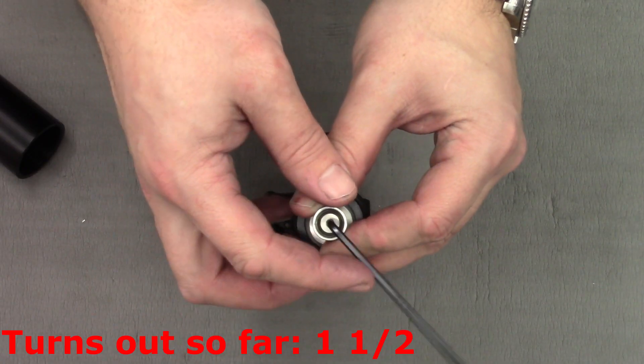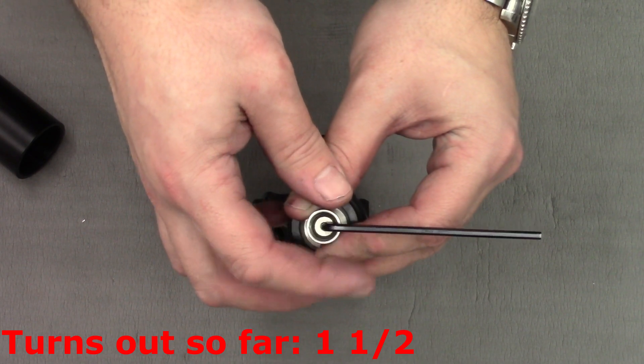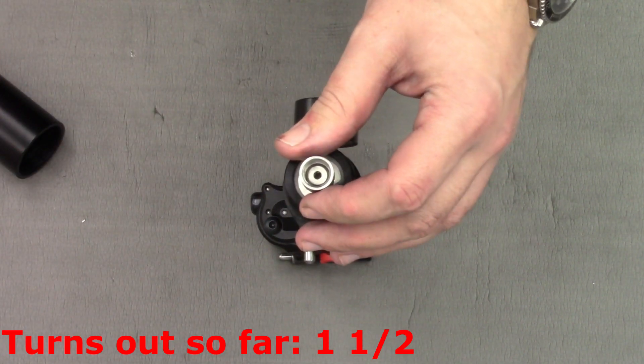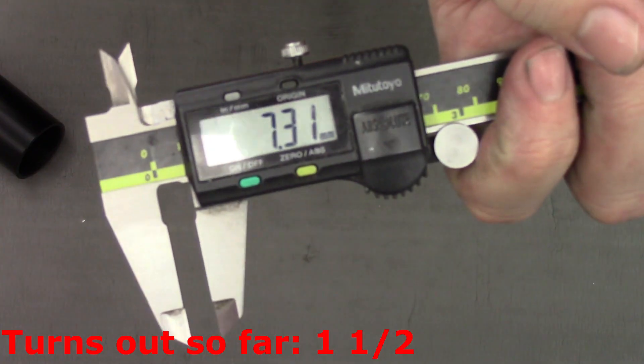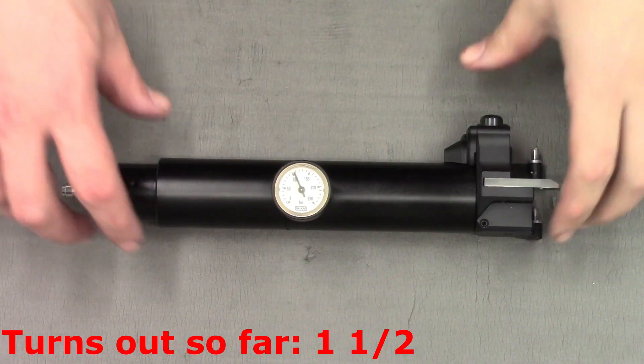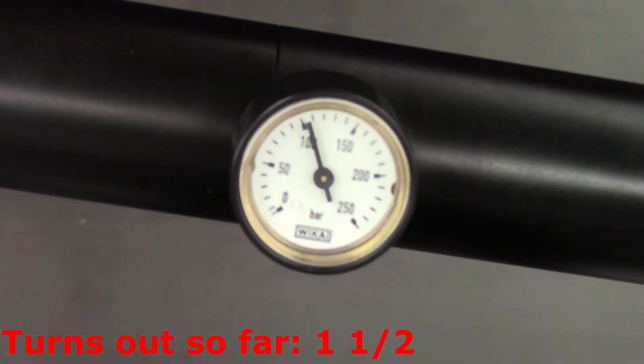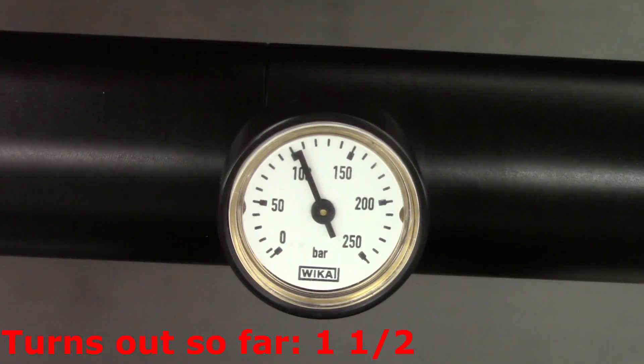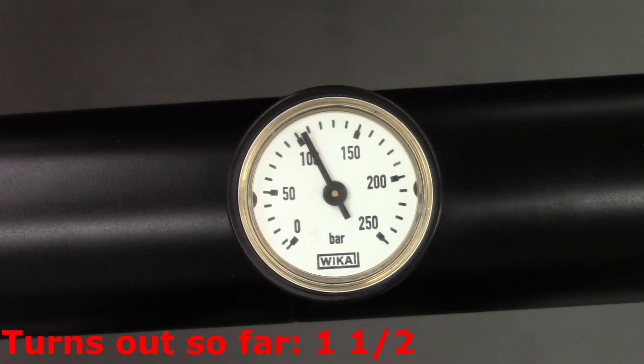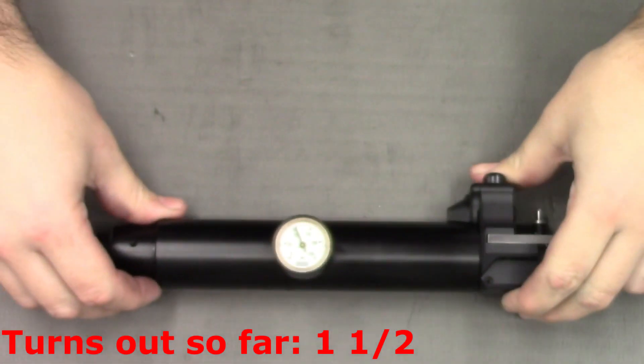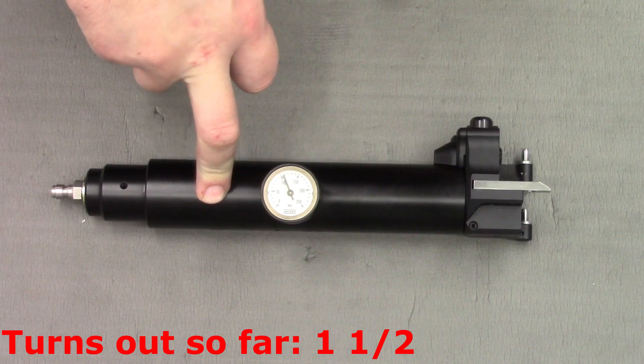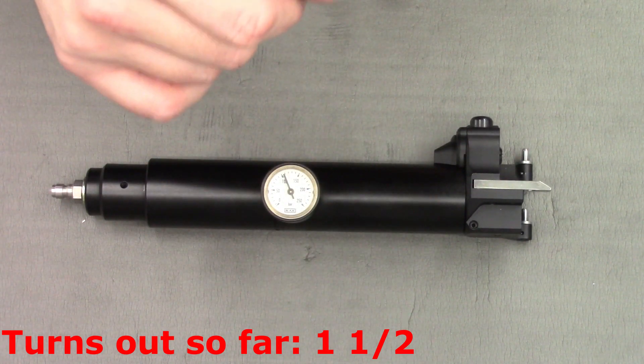So another quarter turn. There we go. That brings us to 7.3. You get the idea now guys. There you go. It's about 105 on the gauge I'd call that. Which is lining up nicely with our previous results. I'll depressurise it, another quarter of a turn.